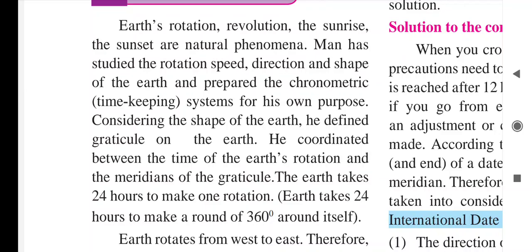With the help of the graticule and the earth's rotation, human beings can coordinate between the time and the place of any particular region. The earth requires 24 hours — one day — to complete its rotation on its own axis. Earth needs 24 hours to complete a journey of 360 degrees, since our earth has a total of 360 degrees.